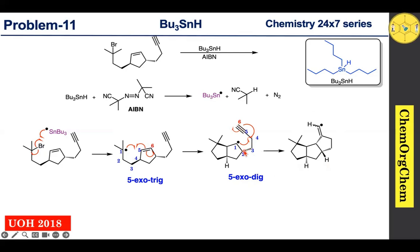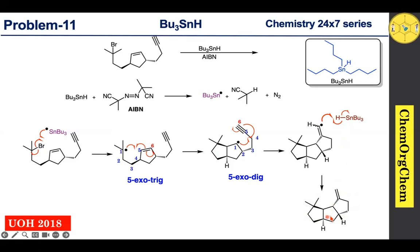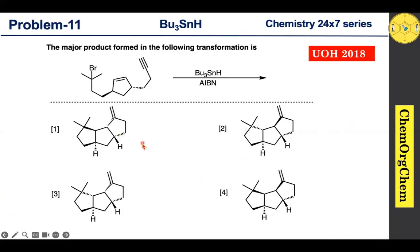Note the stereochemistry here as well. The alkene part is present at the bottom face, so the radical attack takes place from the bottom face, generating this radical intermediate. Now this radical quickly abstracts a proton from tributyl tin hydride, which leads to generating the final product. This radical cyclization takes place in a cascade manner.